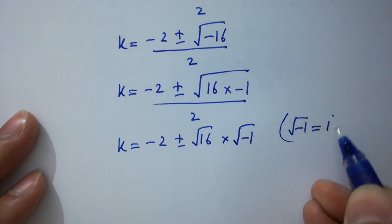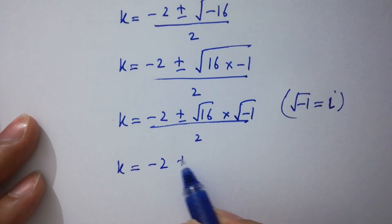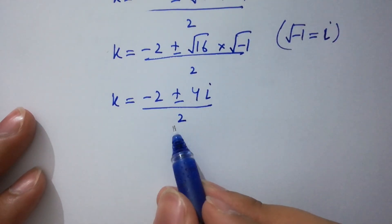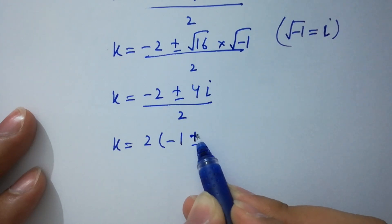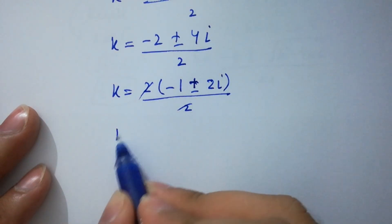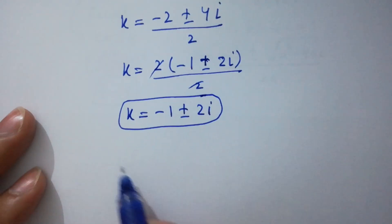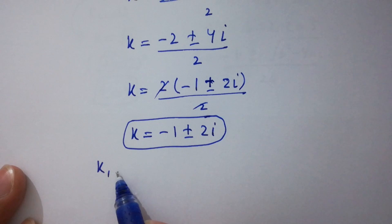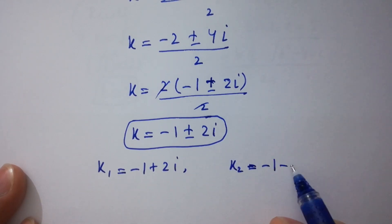Since square root of negative 1 equals i from complex numbers, we have k equals negative 2 plus or minus square root of 16 times square root of negative 1, over 2. Square root of 16 is 4 and square root of negative 1 is i, so k equals negative 2 plus or minus 4i, over 2. Factoring out 2, k equals negative 1 plus or minus 2i. So k equals negative 1 plus 2i and k equals negative 1 minus 2i.